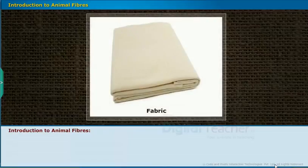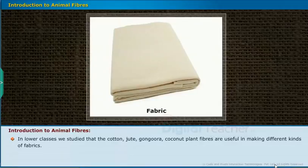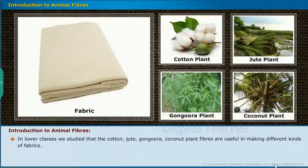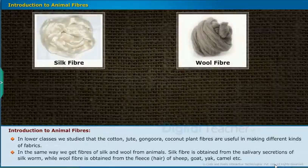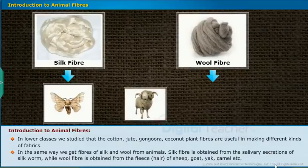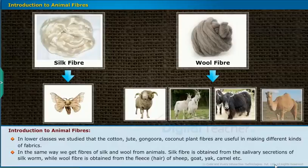In lower classes, we studied that cotton, jute, gongura, and coconut plant fibers are useful in making different kinds of fabrics. In the same way, we get fibers of silk and wool from animals. Silk fiber is obtained from the salivary secretions of the silkworm, while wool fiber is obtained from the fleece or hair of sheep, goat, yak, camel, and others.